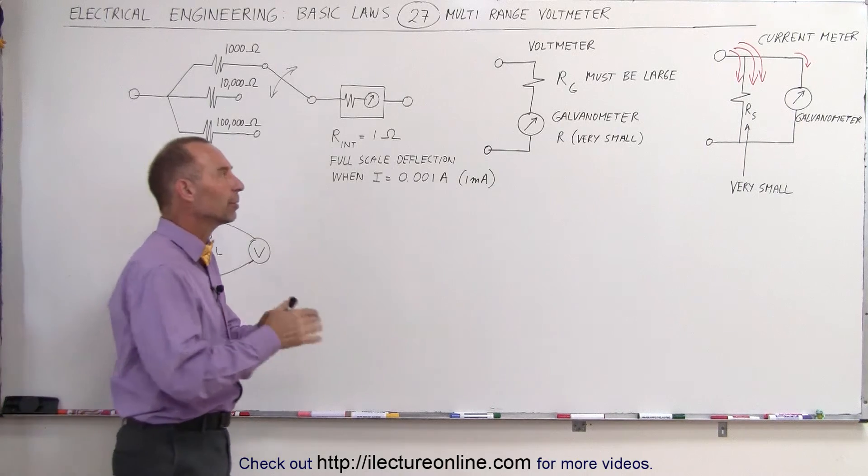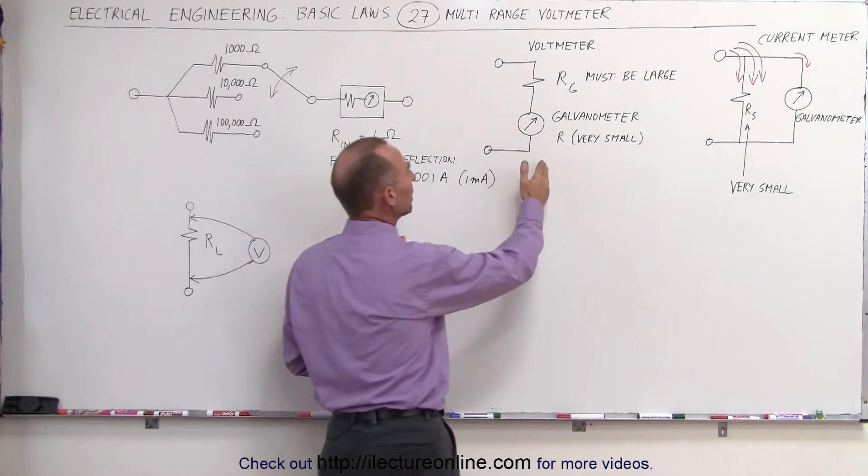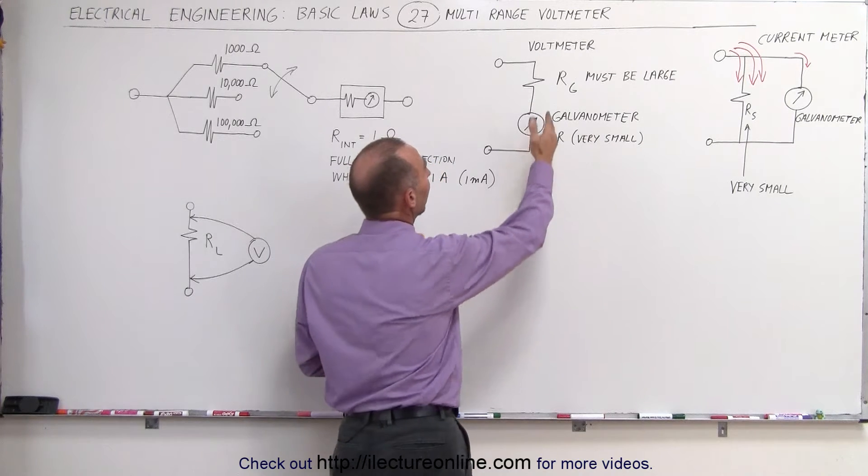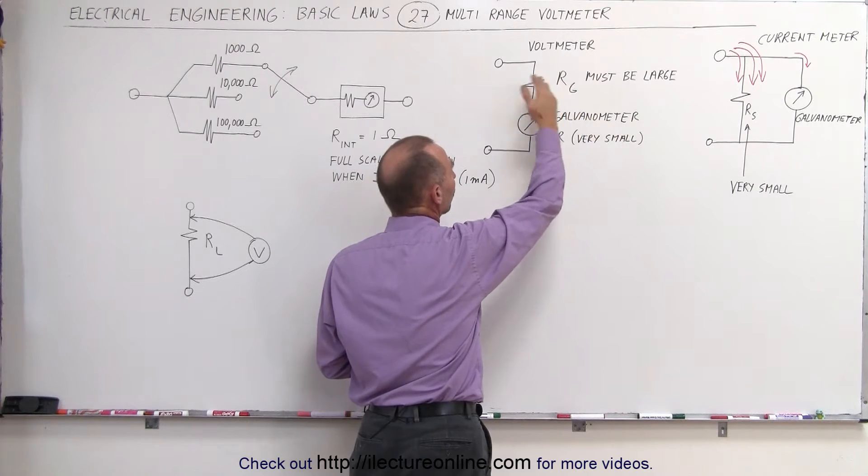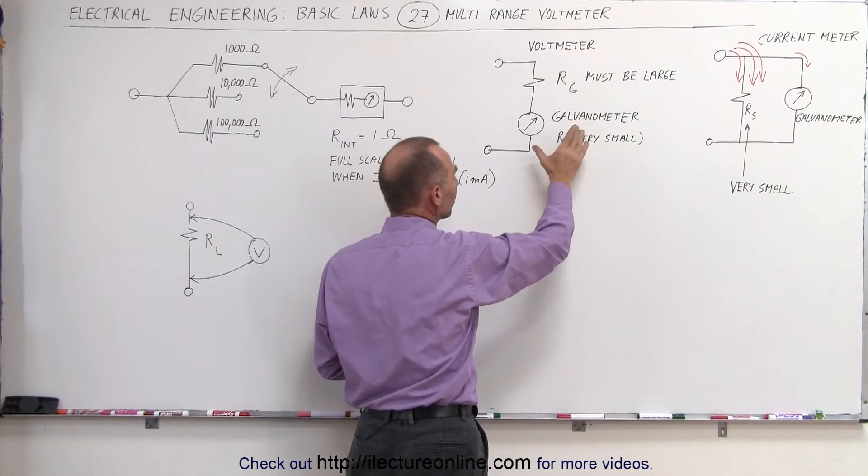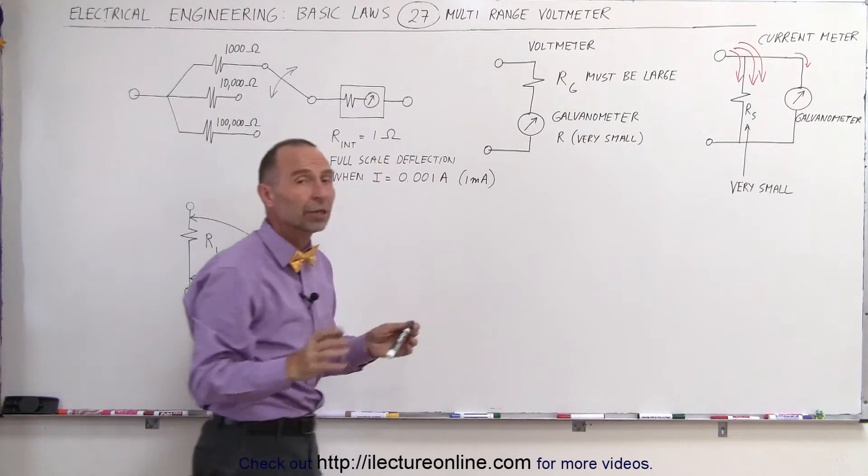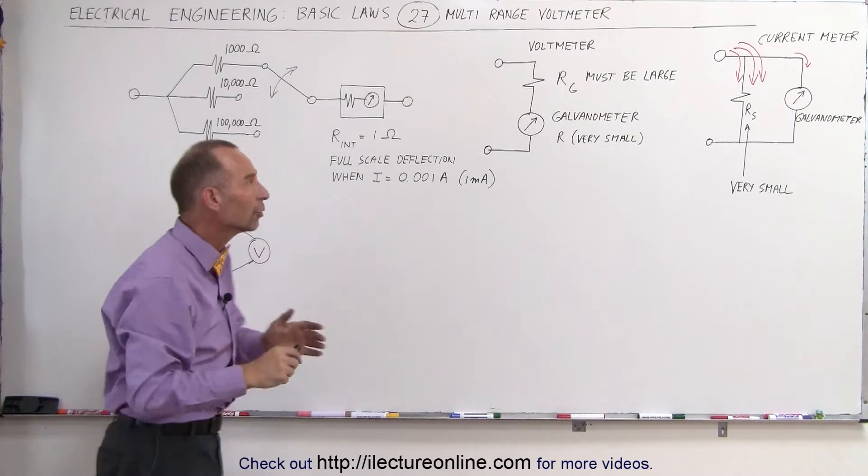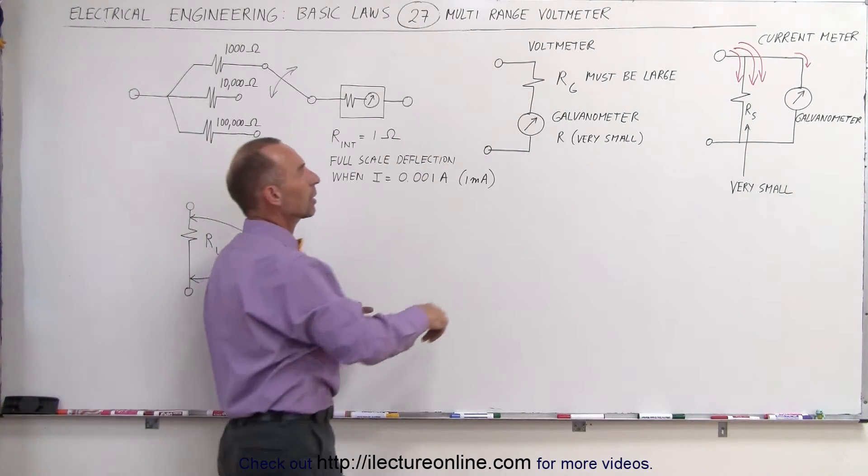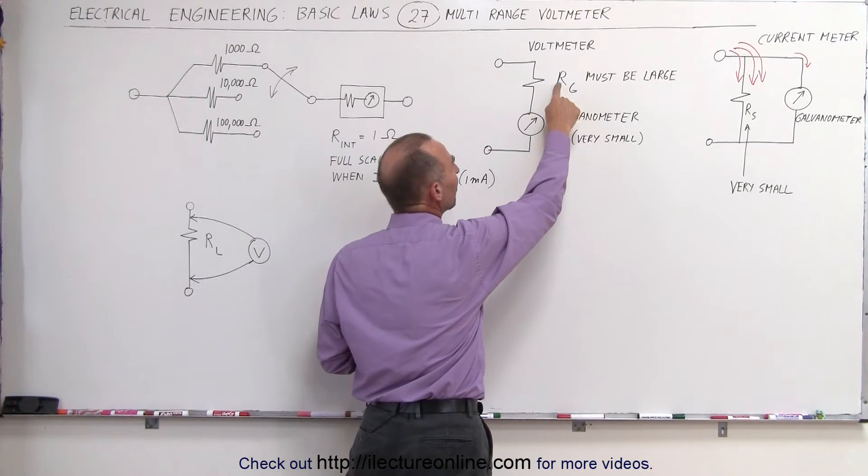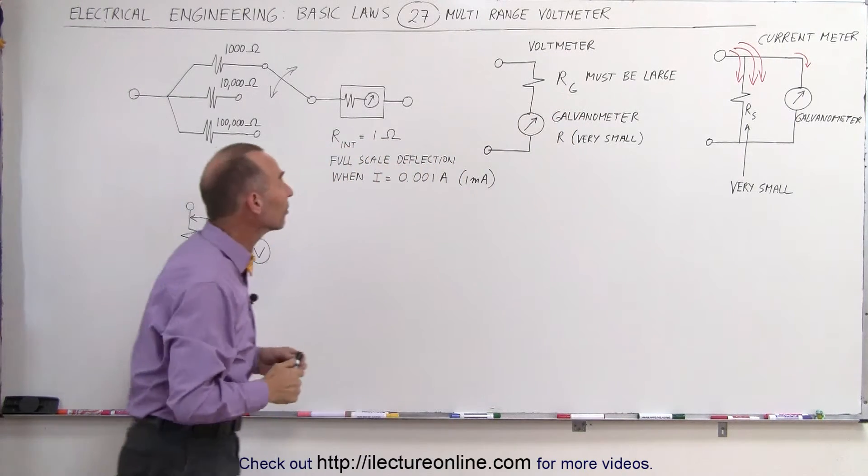We still have the typical concept of a voltmeter, it's a galvanometer if we have an analog voltmeter and some sort of resistance in series. We want that resistance to be large so that the voltmeter will not have much of an effect on the overall circuit. But if you want to have a multi-range voltmeter, we can accomplish that by having different values for this particular resistor in series.